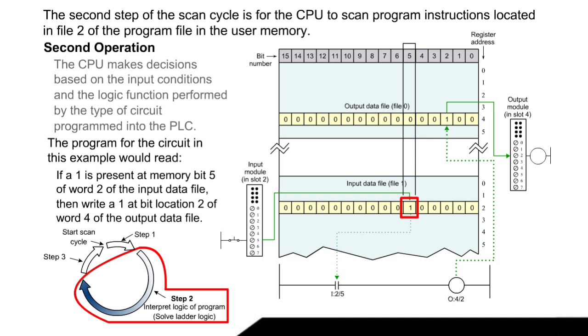The program for the circuit in this example would read, If a 1 is present at memory bit 5 of word 2 of the input data file, then write a 1 at bit location 2 of word 4 of the output data file.